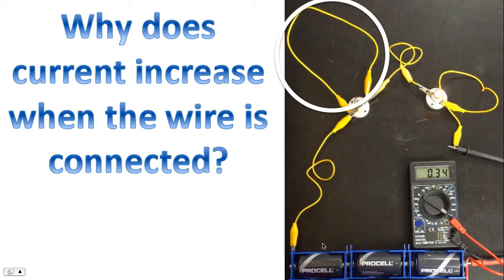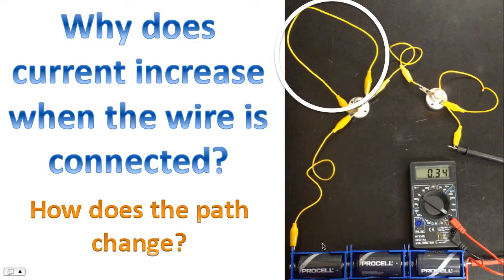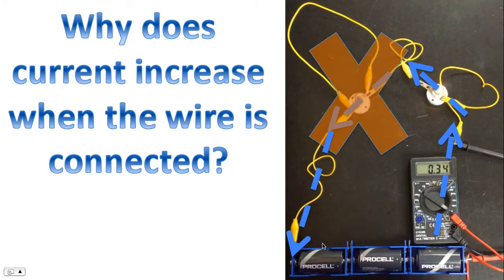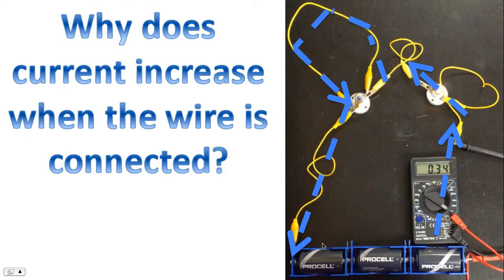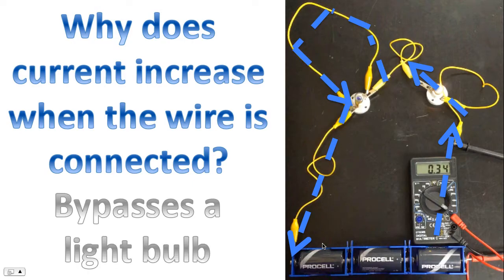Now let's see what happens when I connect the wire. How does the path change? Well, the previous path is incorrect. So we're going to put a big X through that path. That's not the way electricity is flowing now. Now, this is the correct path now. Notice that the path has bypassed the light bulb.